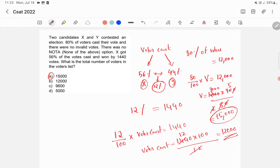So here, what you need to know is that there are total 15,000 voters out of this 80% casted their vote, which is 12,000. Out of this 12,000, 56% is won by X and 44% is won by Y. So this is how this question works.